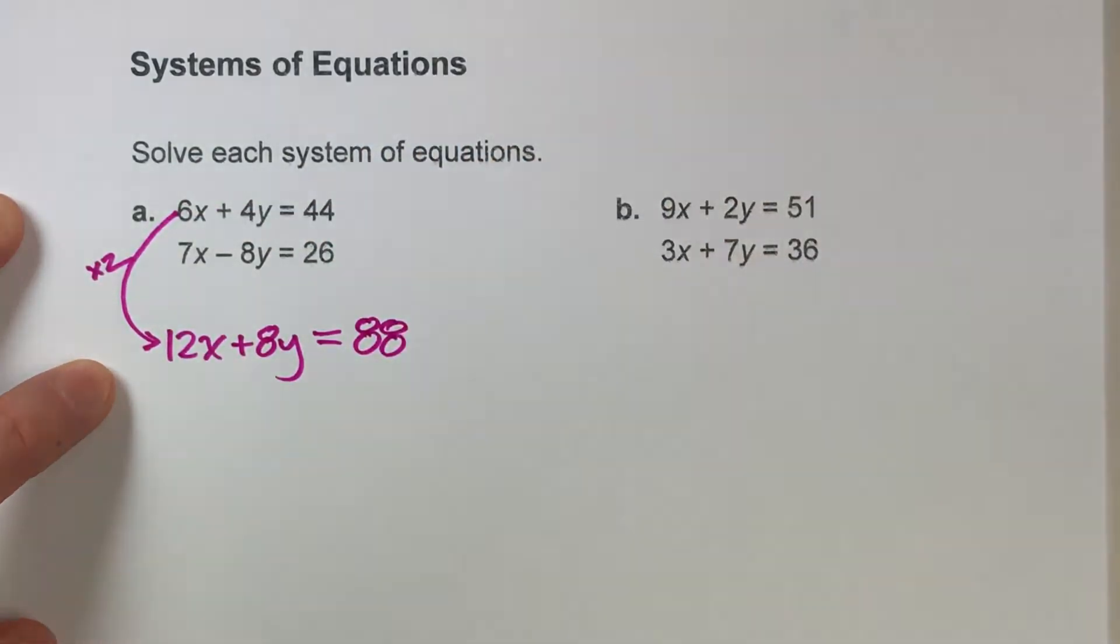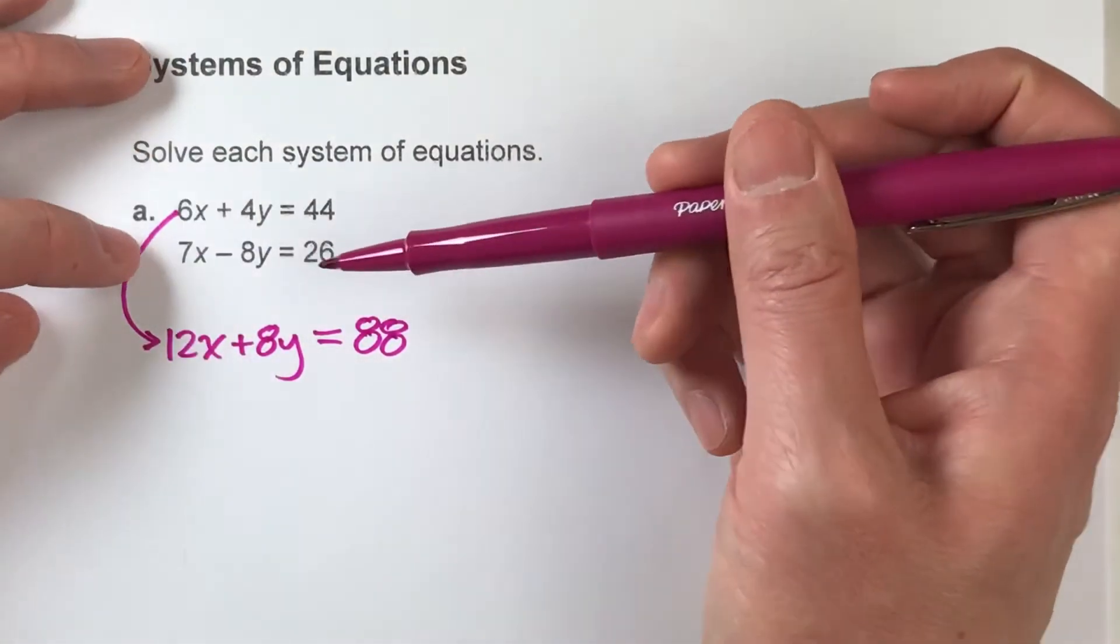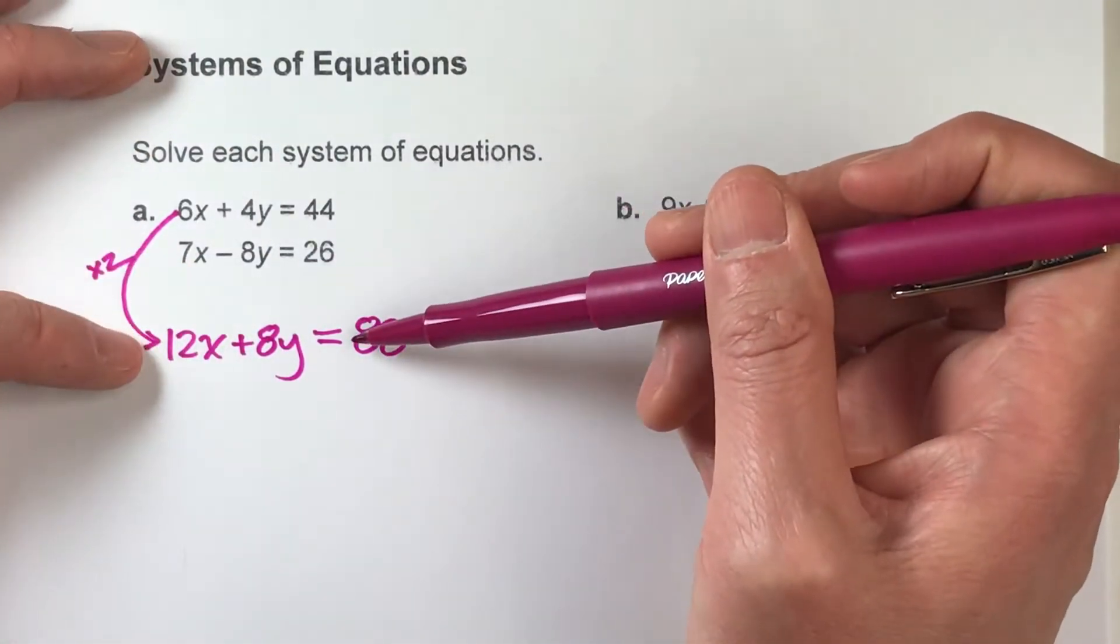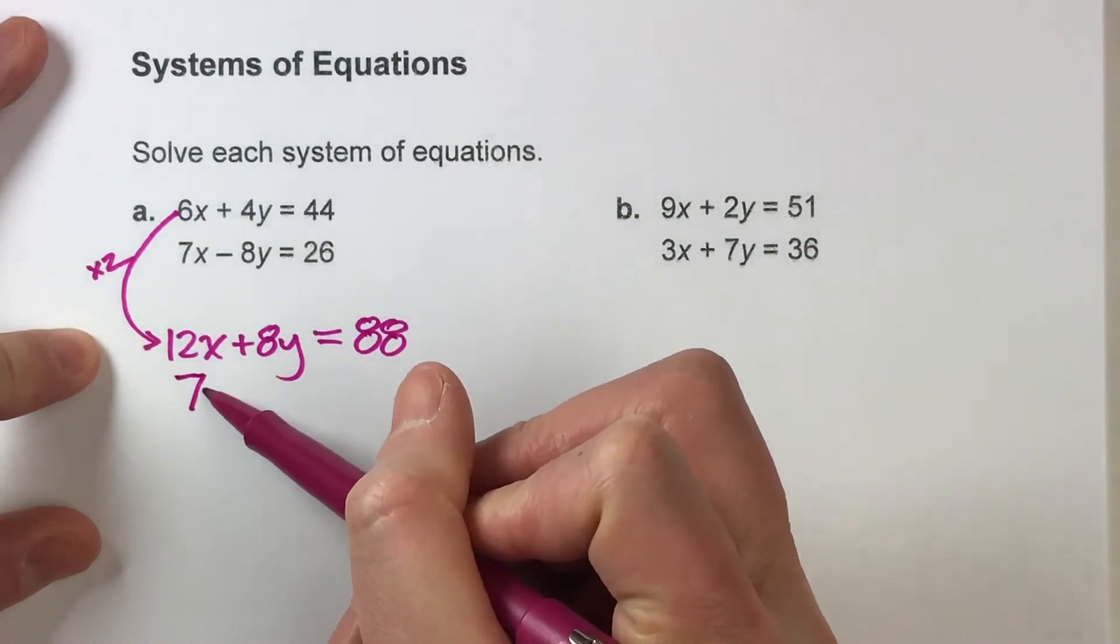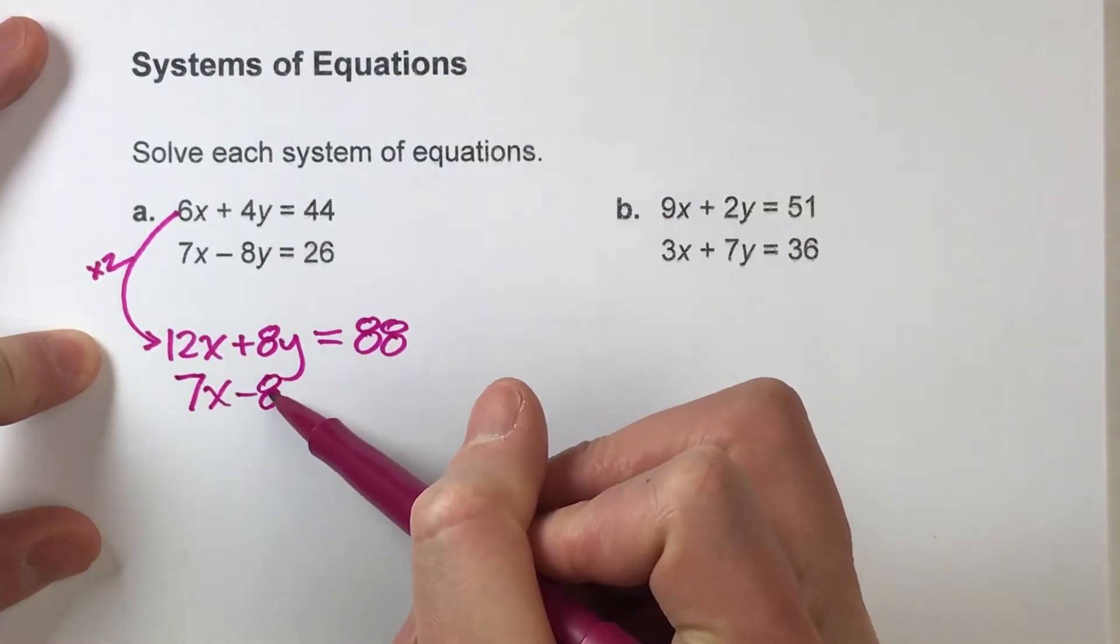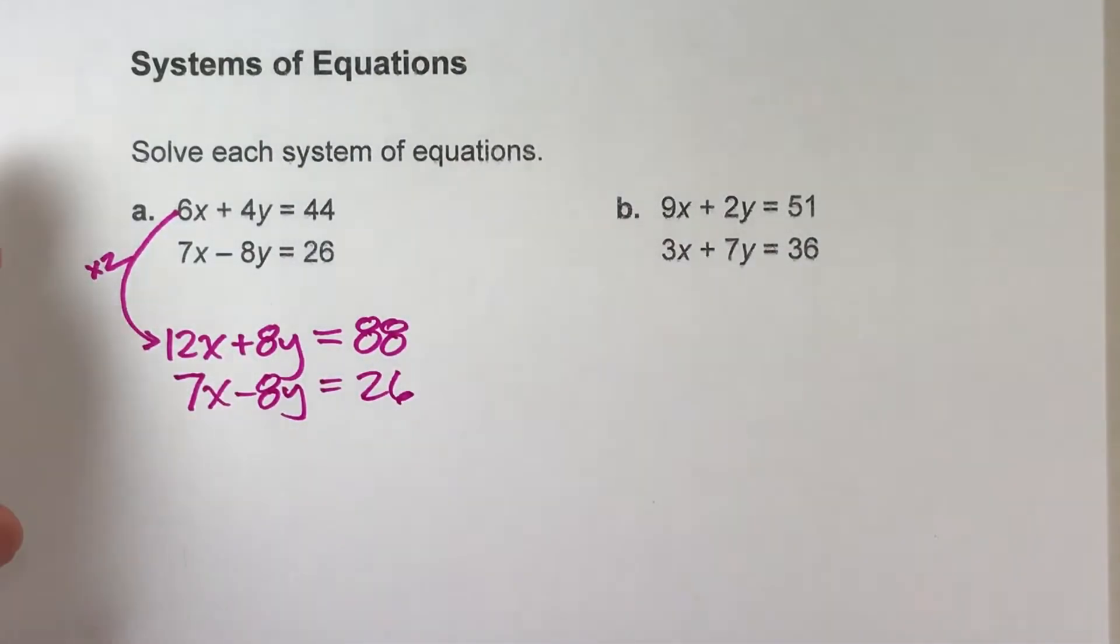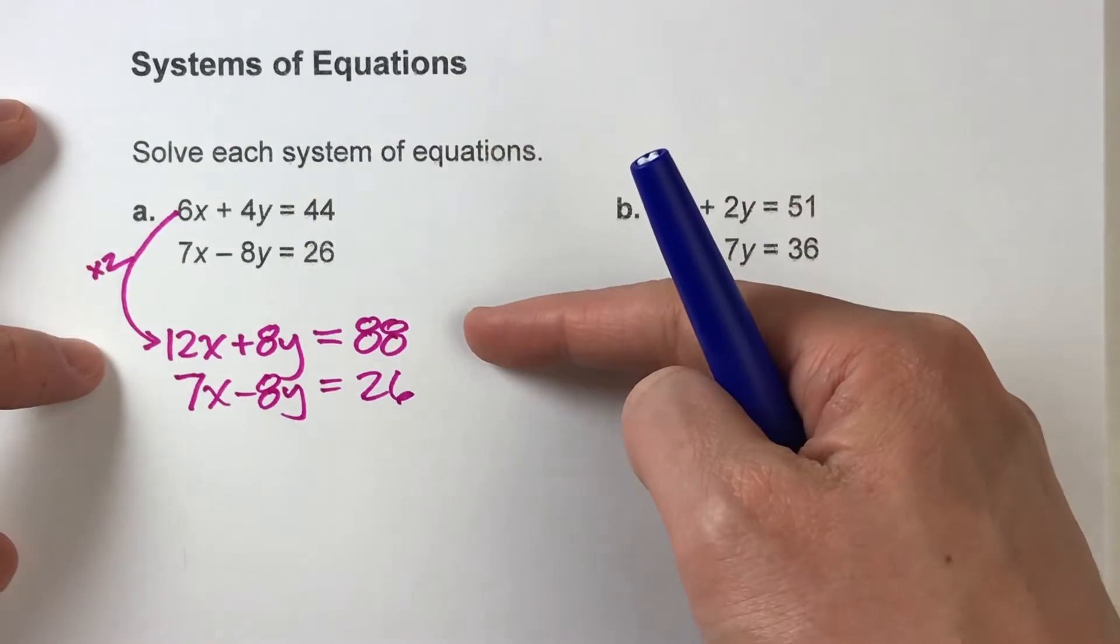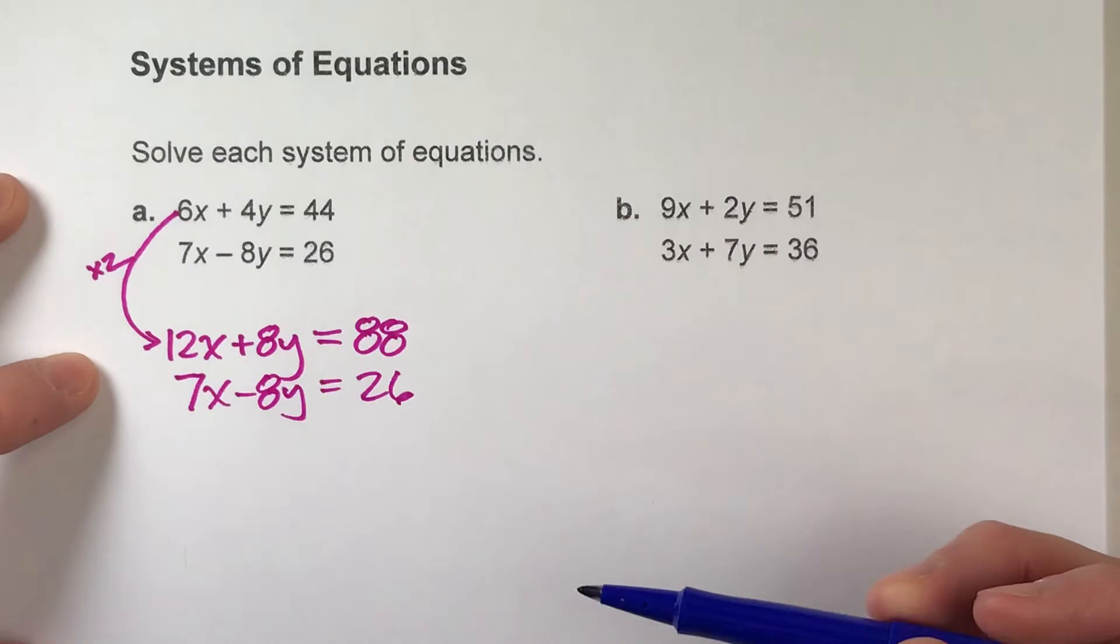Once I've done that, now the second equation and this new equation—the Y's match up. Here I'm gonna write it down: 7X minus 8Y equals 26. So simply by multiplying that first equation by 2, now my Y's match up. Now I can solve this system of equations using the elimination method.